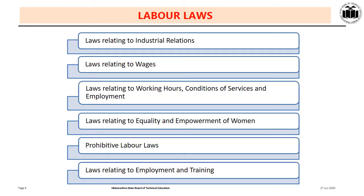Labor laws: laws relating to industrial relationships — there should be a harmonious relationship between the employee and employer. Laws related to wages, that is the Minimum Wages Act. Laws related to working hours, working conditions, and service conditions — under the Factory Act 1948. Laws relating to equality and empowerment of women — also under Factory Act 1948. Prohibitive labor laws — a worker should not work under the influence of alcohol or drugs. And laws related to employment and training.